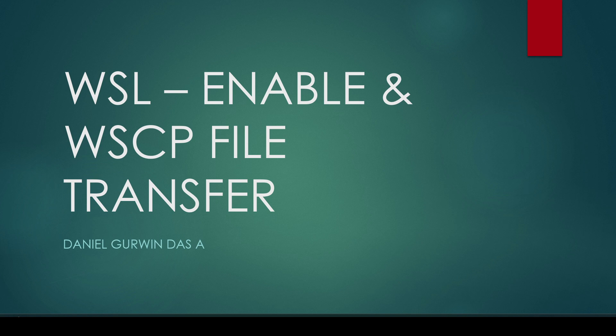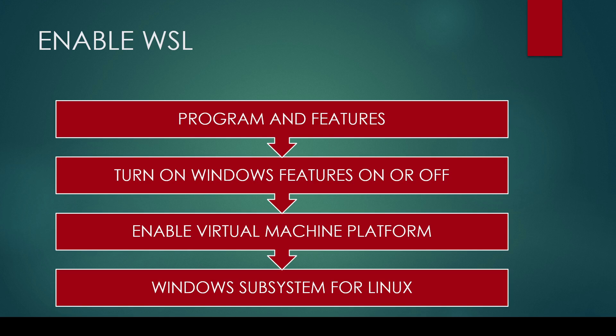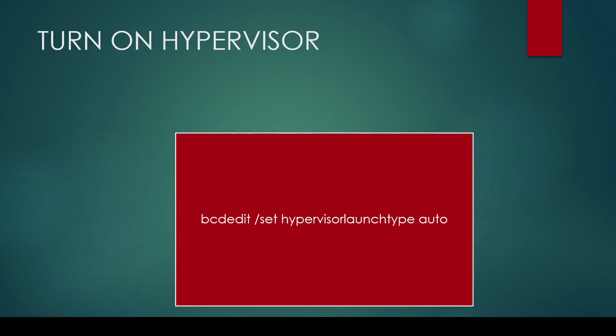The first step is to enable the Windows Subsystem for Linux. To do that, go to the Control Panel, then Programs and Features, and select 'Turn Windows features on or off.' Enable both Virtual Machine Platform and Windows Subsystem for Linux.